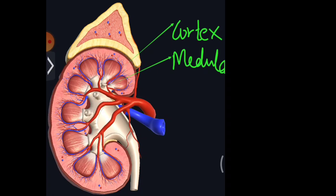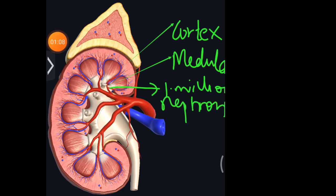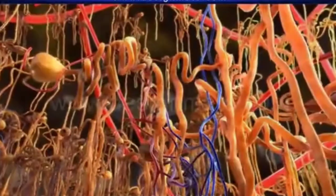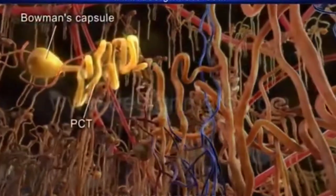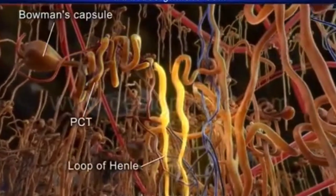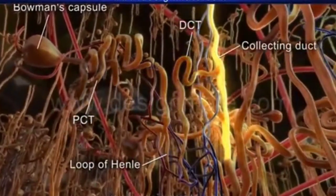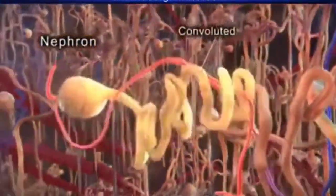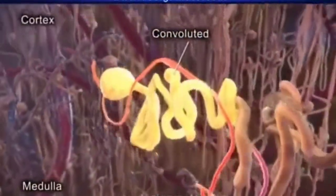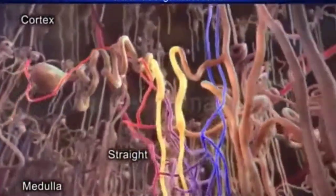The waste products generated in various organs of the body are filtered and removed by the kidney. Each kidney is made up of approximately more than 1 million microscopic, thin tubular functional units called nephrons or uriniferous tubules. These nephrons are the structural and functional units of the kidney where actual filtration takes place.